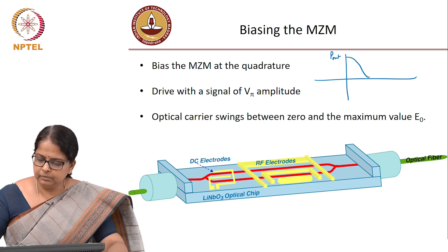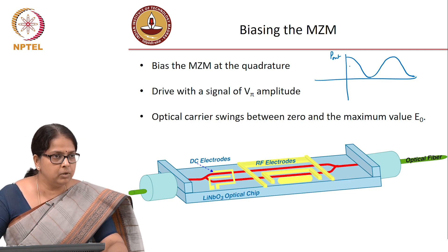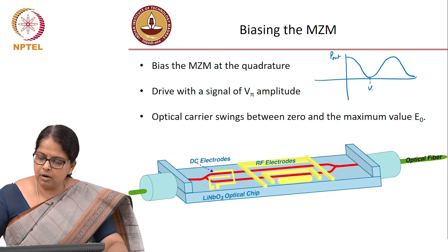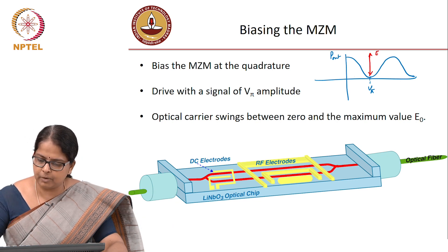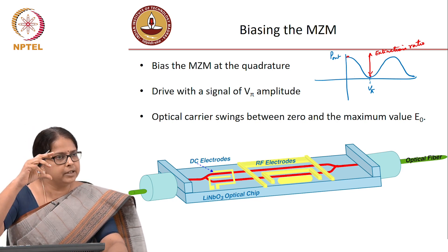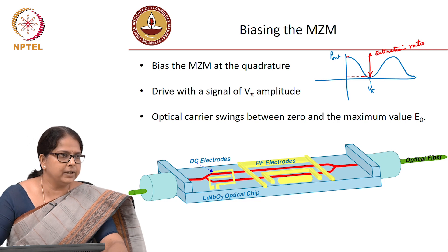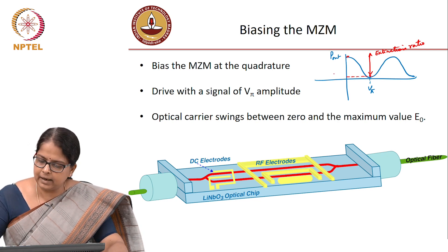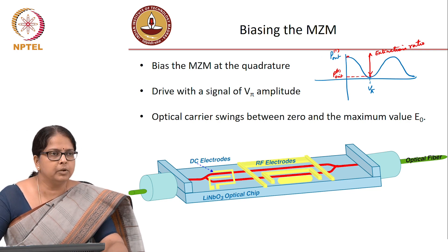Let us say this is P_out by P_in. Corresponding to a voltage Vπ, you have a minimum, and you define what is called the extinction ratio of the modulator as the ratio between the maximum and minimum. This is similar to defining the visibility of a fringe in an interferometer. There is a small power that will survive because of incomplete destructive interference — call that P_out corresponding to the 0 state and P_out corresponding to the 1 state.